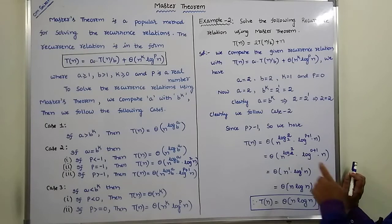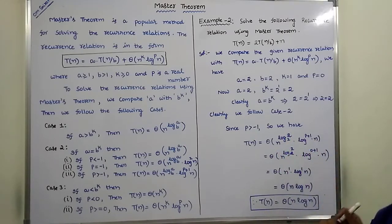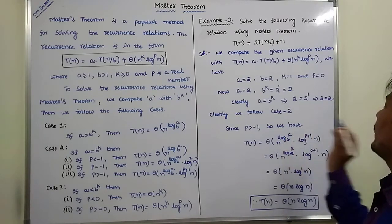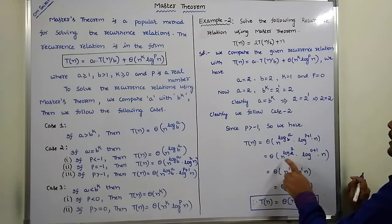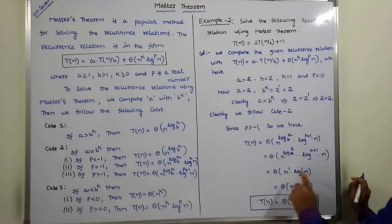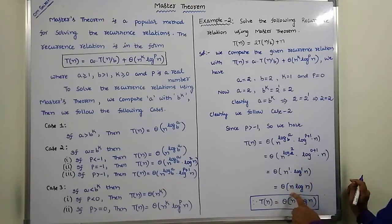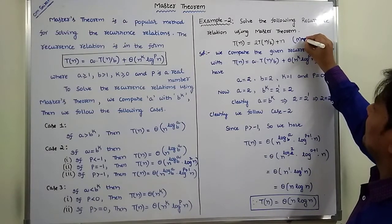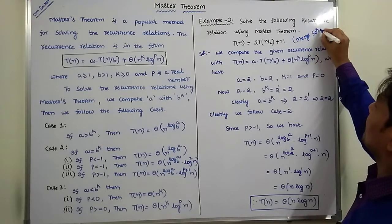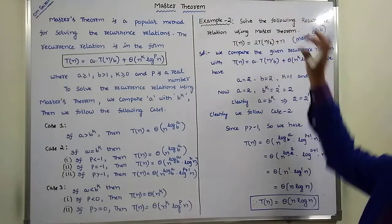Substituting the values: A = 2, B = 2. So theta(n^(log_2(2)) * log^(0+1)(n)). Since log base 2 of 2 equals 1, this becomes theta(n^1 * log^1(n)). Therefore, T(n) = theta(n log n). This is the time complexity of merge sort and this recurrence relation.